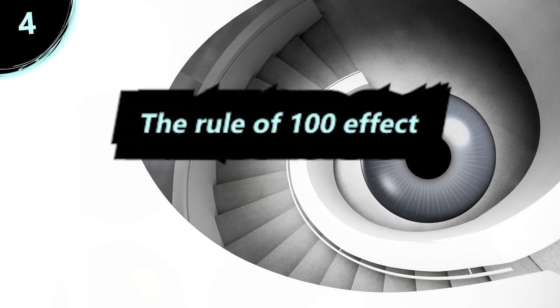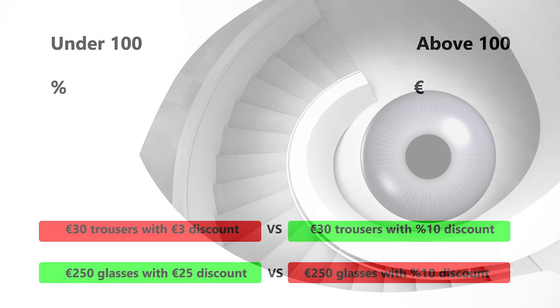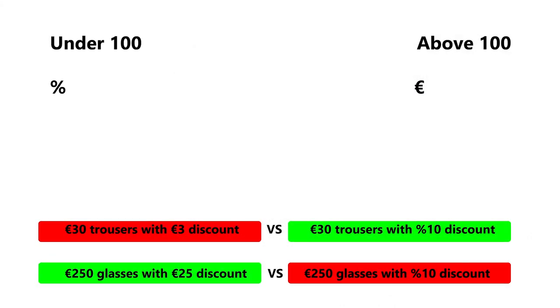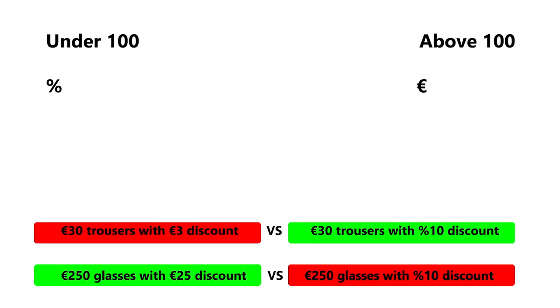The rule of 100 effect: Offering percentage discounts for prices under 100 makes the discount appear larger. For prices above 100, absolute numbers are more effective.